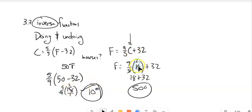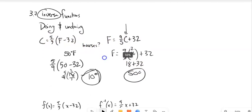And then times 5 ninths gives me my 10. And notice when I plug the 10 in, times 9 fifths, that gives me my 18. Add 32, I get my 50. Doing and undoing. These are functions that are inverses. They undo each other.